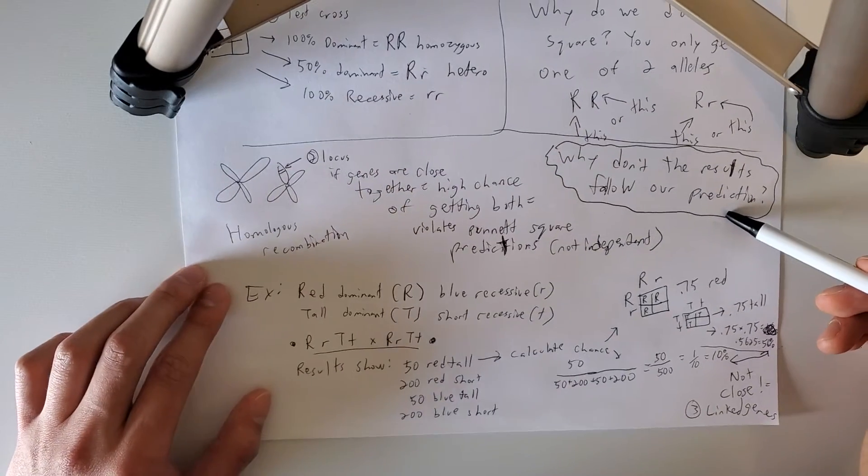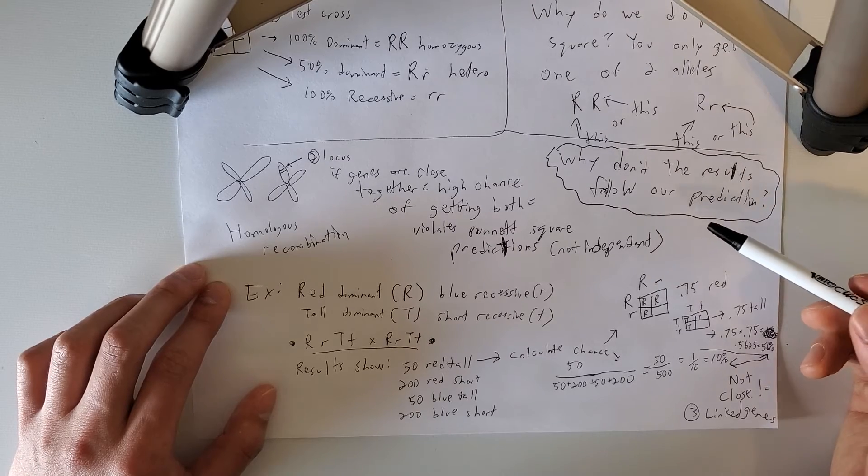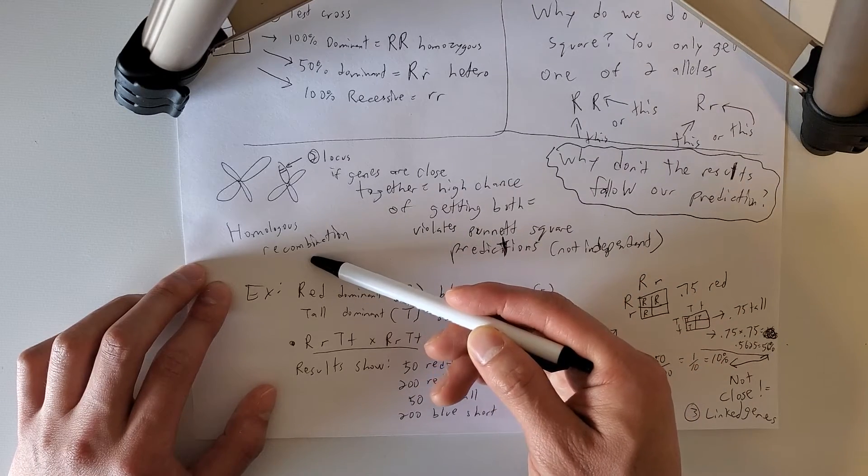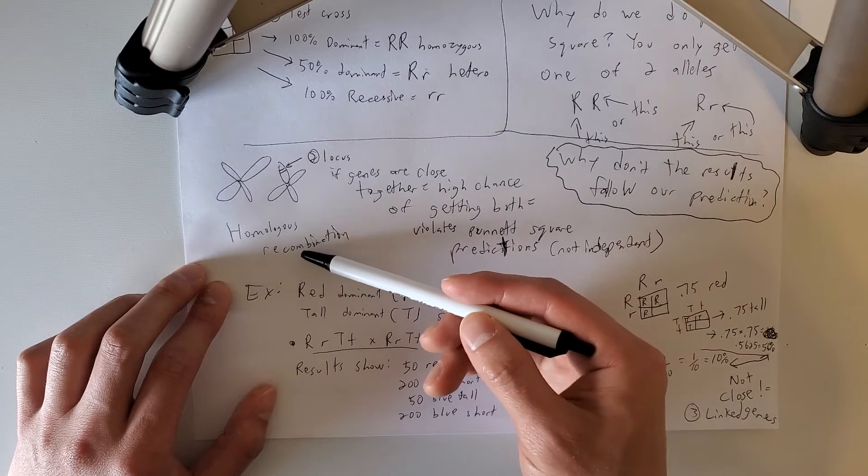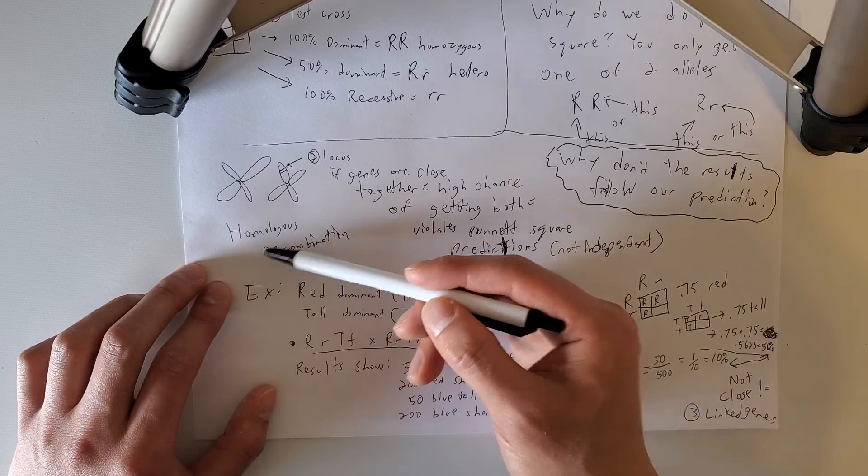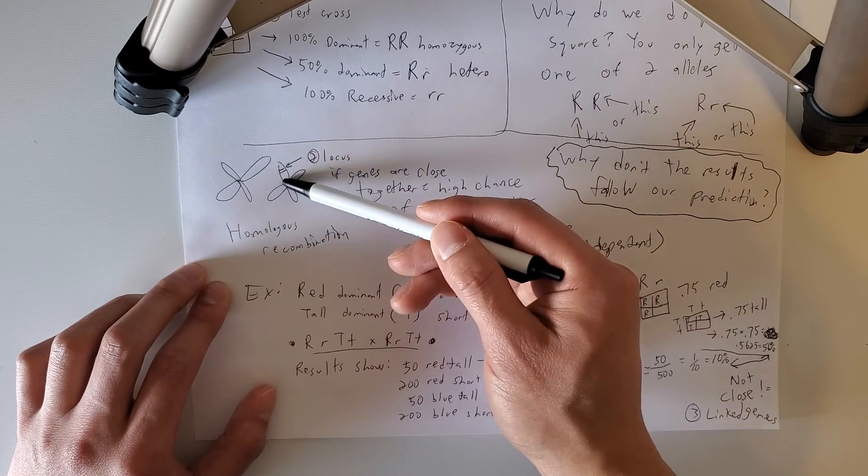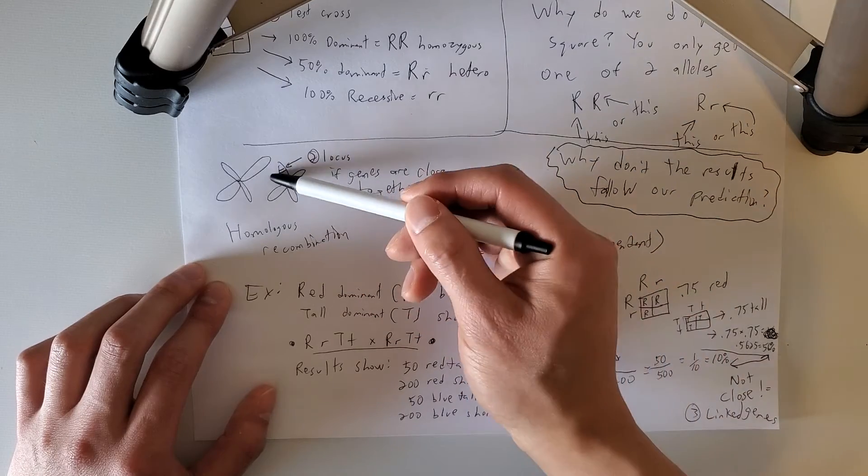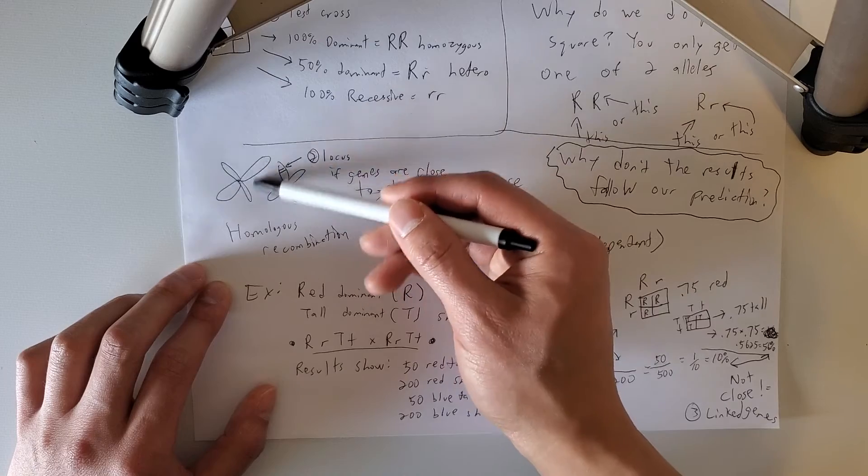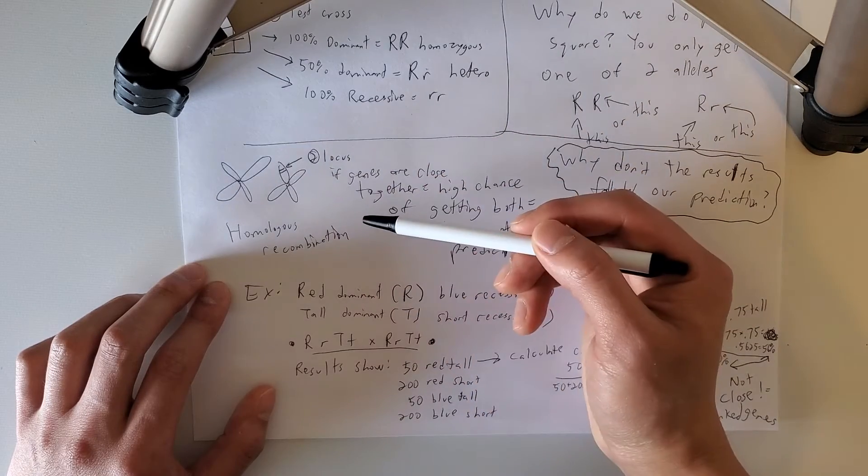All right, so let's say you did a Punnett square, and the results don't follow your prediction, what could be causing it? Well, as you remember from homologous recombination, during sexual reproduction, you have to make sex cells. So before you make the sex cell, some of the chromosomes, they might switch genes with the homologous pairs. So when you switch some of the genes, this chromosome now might have a different mixture of genes than this other chromosome.